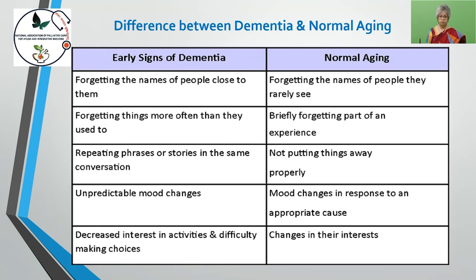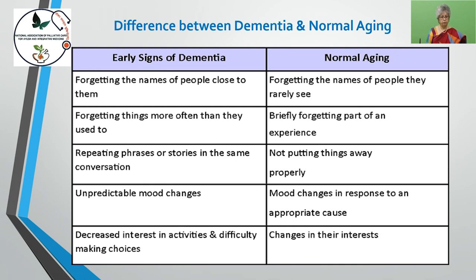There is a difference between dementia and normal aging. As age advances, people are likely to forget many things, particularly names of persons or places, but this forgetfulness is different from dementia. In dementia, the person forgets the names of people close to them, whereas in normal aging, the person forgets names of people they rarely see. In dementia, things are forgotten more often than they used to be, while in normal aging, things may be forgotten briefly as a passing experience.